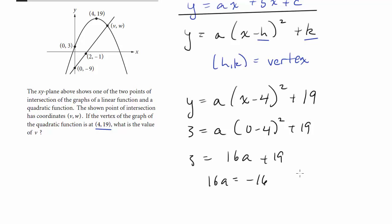16a equals negative 16. So a is negative 1, which is good, because this is an upside-down parabola, so it should be negative. That's nice to see that's consistent. So far we have negative (x minus 4) squared plus 19. There is our equation for the parabola.